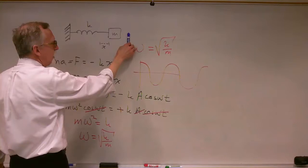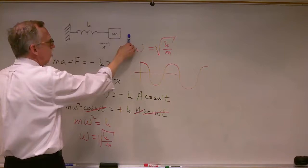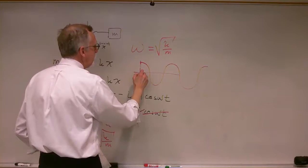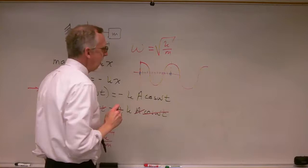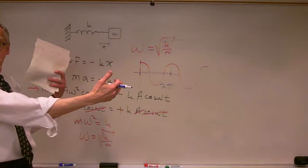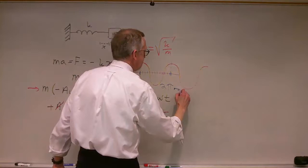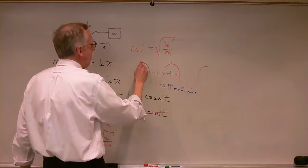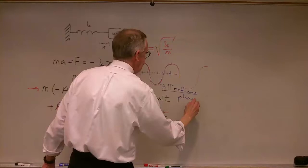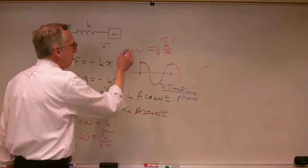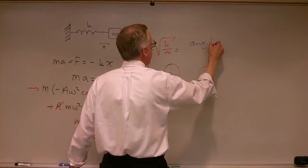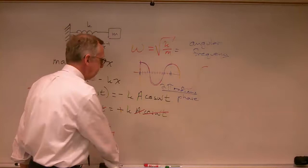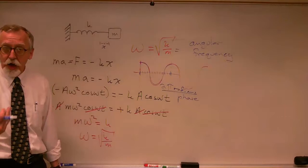If we think about one complete oscillation — from maximum displacement through equilibrium to minimum displacement, back through equilibrium to maximum displacement — and we break this up into two pi pieces, kind of like breaking up an oscillation into 360 degrees, we'll break it up into two pi radians of phase rather than two pi radians of angle. We can think of omega as something more general — an angular frequency, not necessarily an angular velocity.